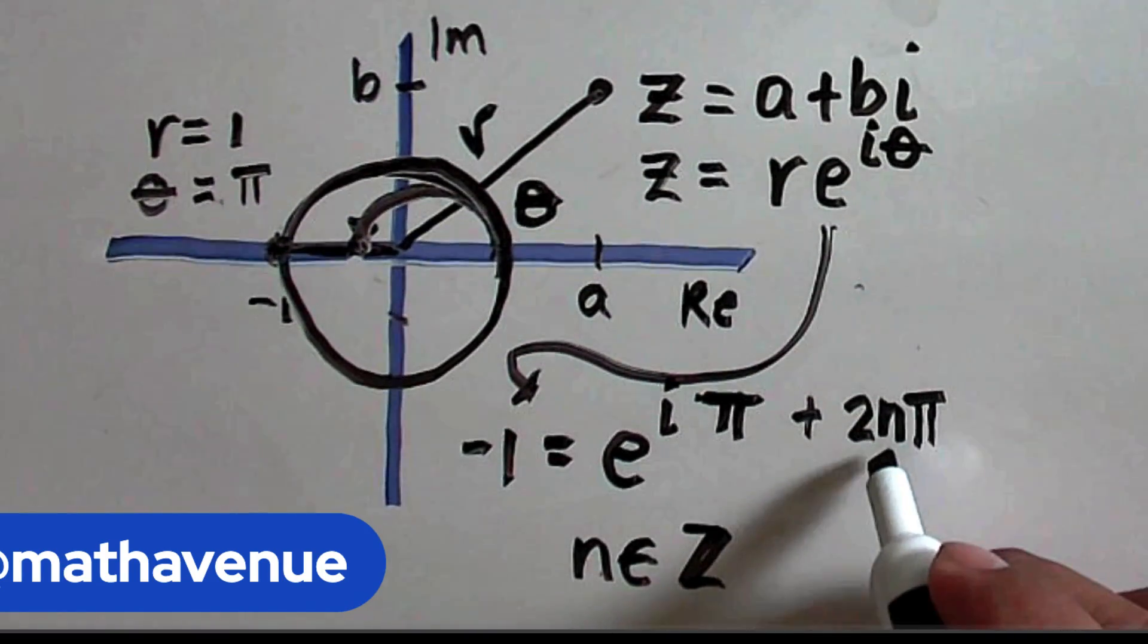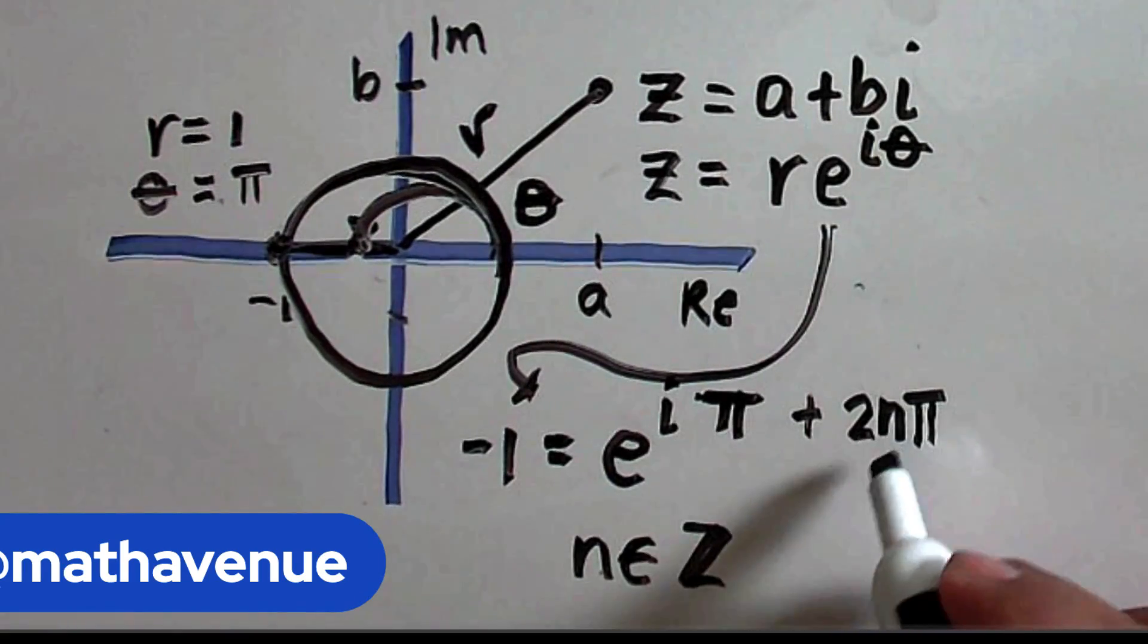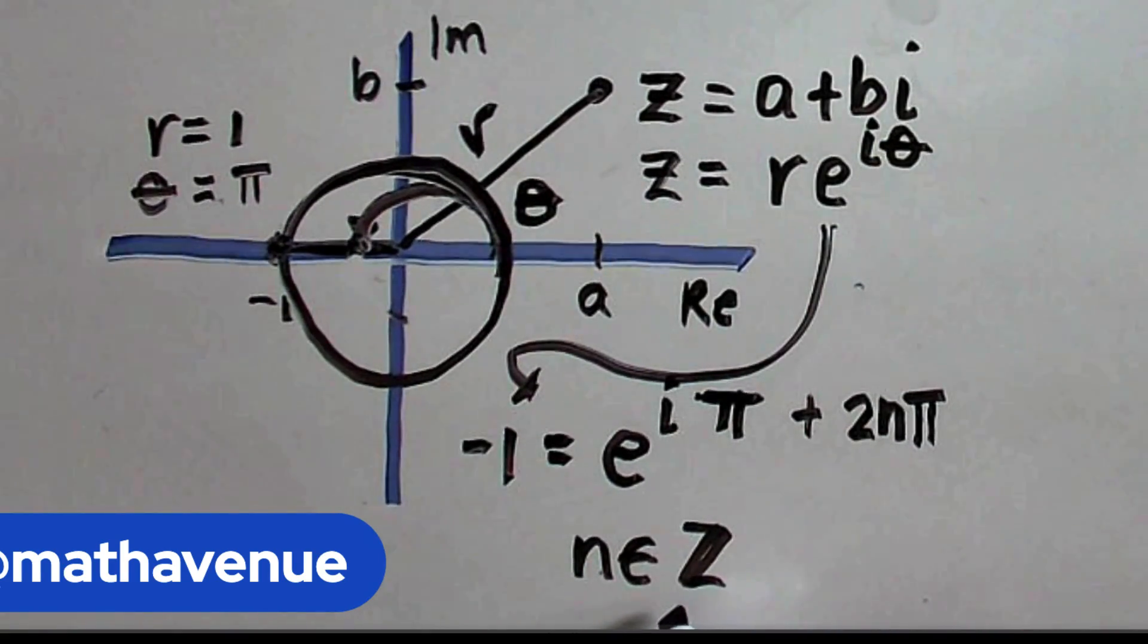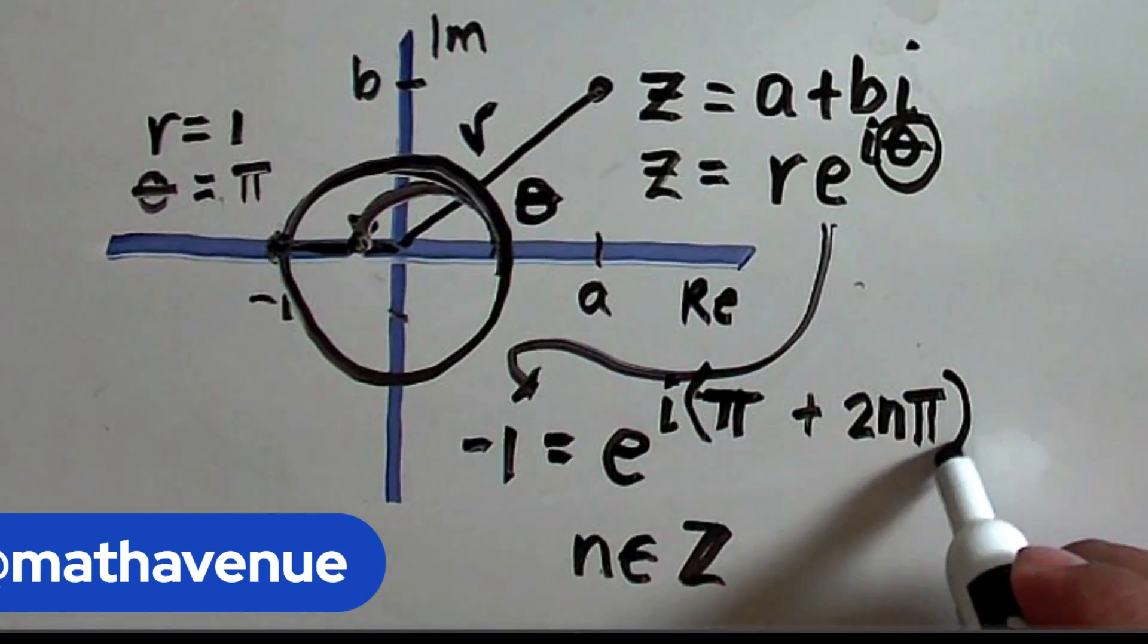If I multiply 2π by n, I am getting multiples of 2π, where n is an element of the set of integers. So, this angle now here is now this entire angle here.